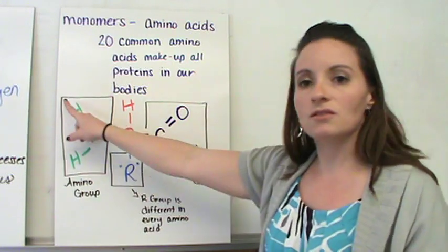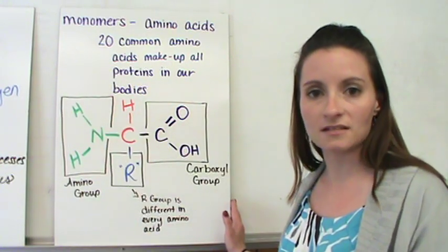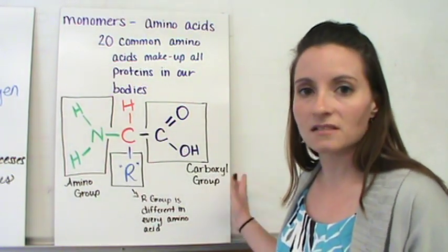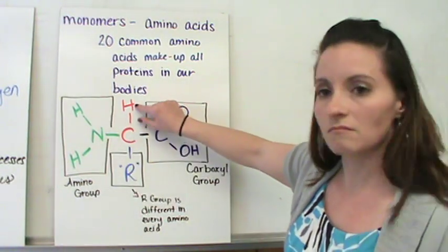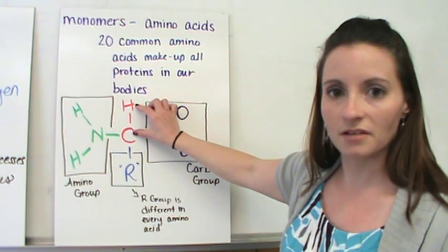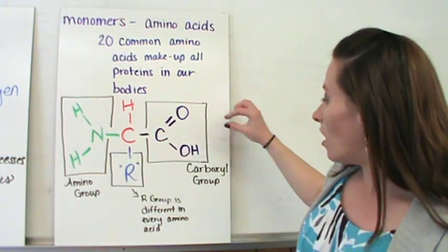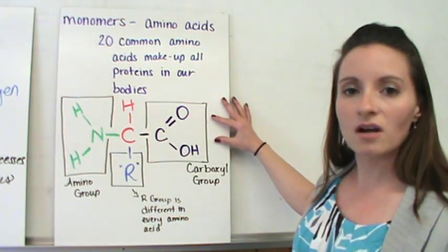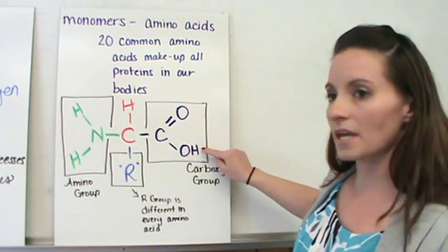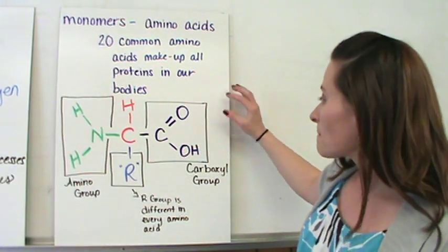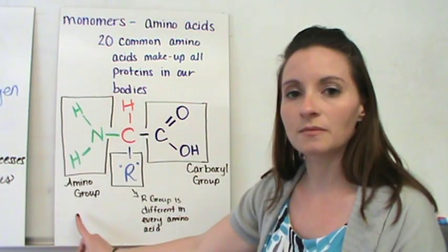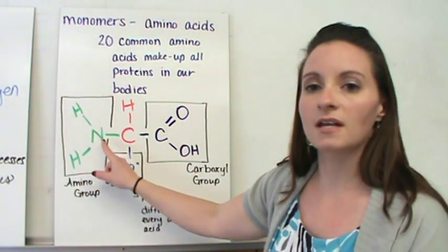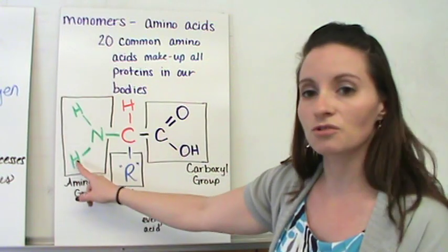So, this is the structure of an amino acid. Every amino acid has four parts. You've got your central part, which has the carbon, the central carbon, with the hydrogen coming off of the center of it. On one side, you have what's called a carboxyl group. This is a COOH group. And this is called the carboxyl group. The other side, you have an amino group. The amino group is an NH2 group.